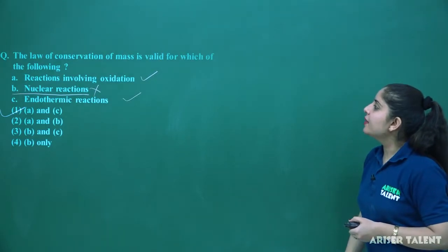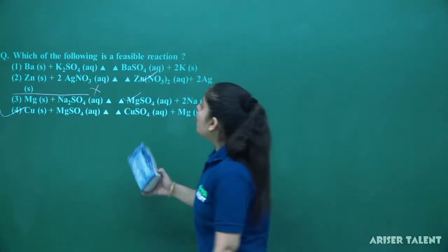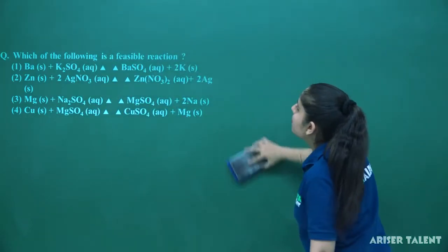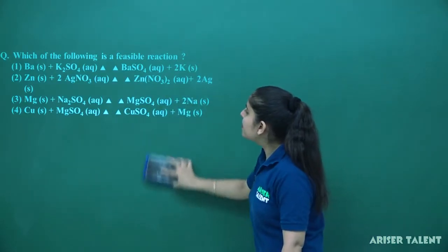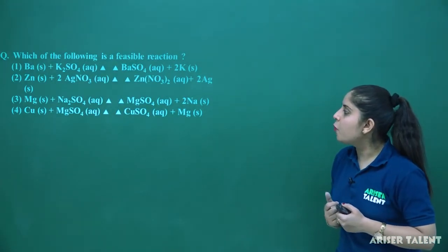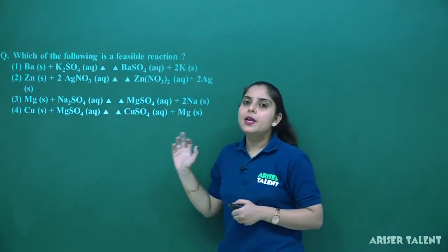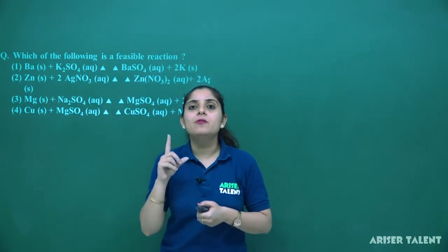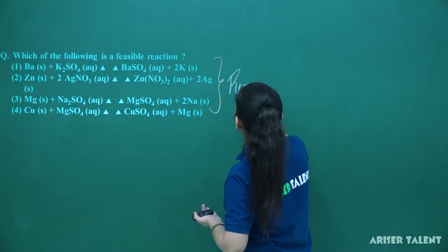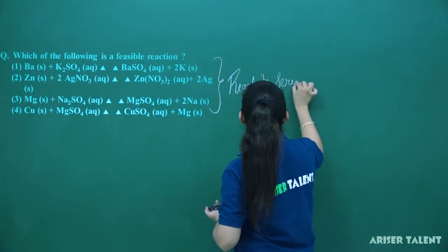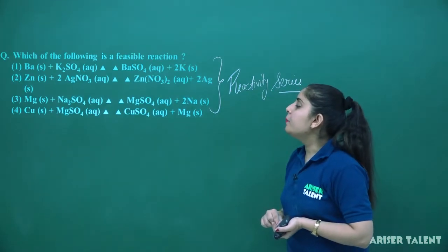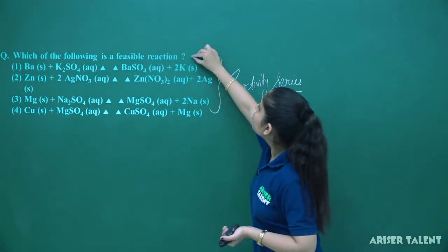Which of the following reactions is a feasible reaction? Barium plus potassium sulfate gives barium sulfate plus potassium. Zinc plus AgNO3 gives zinc nitrate plus Ag. Mg plus Na2SO4 gives MgSO4. Copper plus magnesium sulfate gives copper sulfate. A reaction is feasible only when the reacting metal lies above another metal in the reactivity series. You have to learn the reactivity series very clearly. Barium and potassium reaction is not possible because they will not displace each other — this is not a feasible reaction.